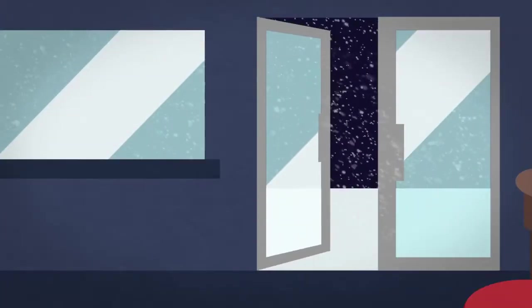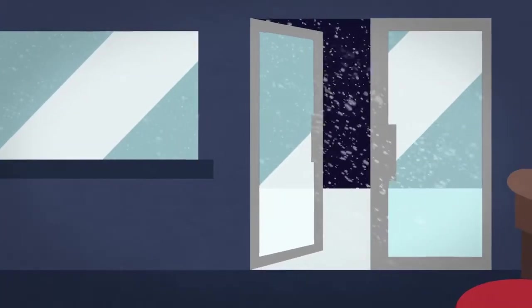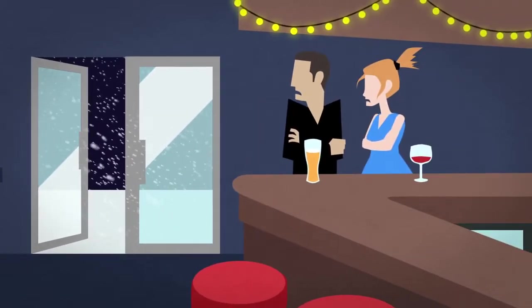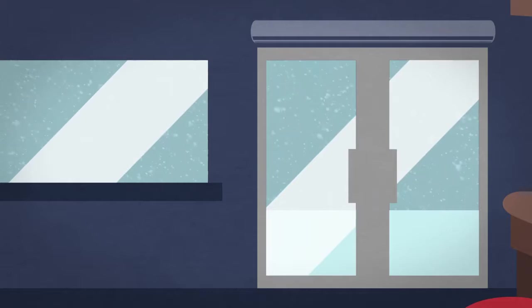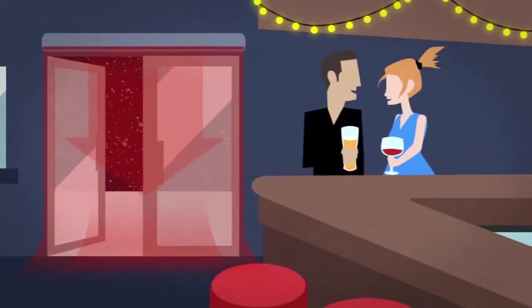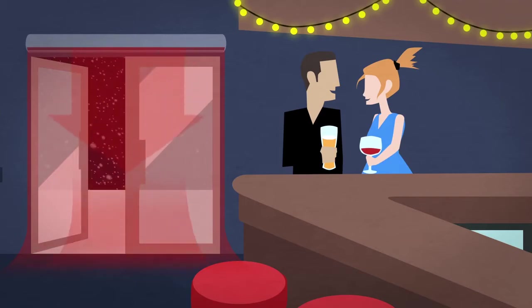Cold outside often means cold inside, which is why restaurants and bars use Berner's architectural air curtains to keep out the chill. By protecting the temperature at the front of the restaurant, complaints go down, comfort goes up, and the heating system runs less often.